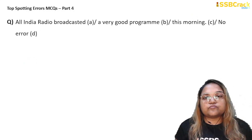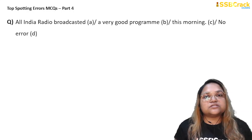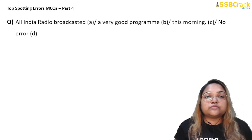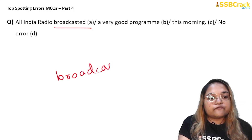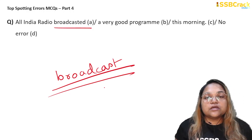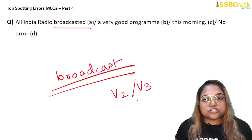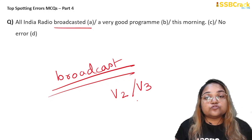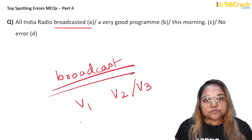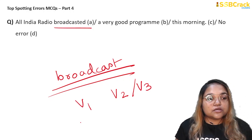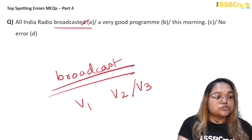Next question: 'All India Radio broadcasted a very good program this morning.' At first reading you may find no error and be tempted to answer D, but D is not correct — there is definitely an error in part A. The word 'broadcasted' is wrong. 'Broadcast' is an irregular verb, meaning its V1, V2 (past form), and V3 (past participle) forms all remain the same — you do not add '-ed.' So it should be: 'All India Radio broadcast a very good program this morning.' Answer: option A.